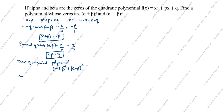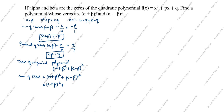Sum of zeros equals (α+β)² + (α-β)². We know (α+β), but we need to expand (α-β)². Using the identity (a−b)² = a² + b² − 2ab, we get (α−β)² = α² + β² − 2αβ.